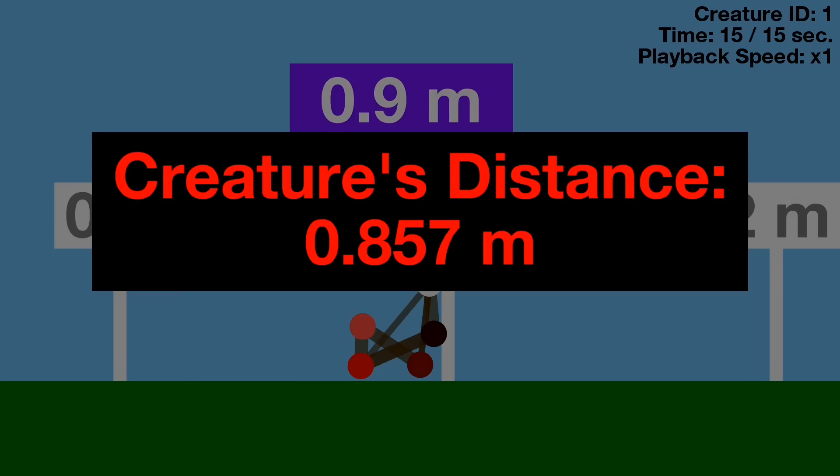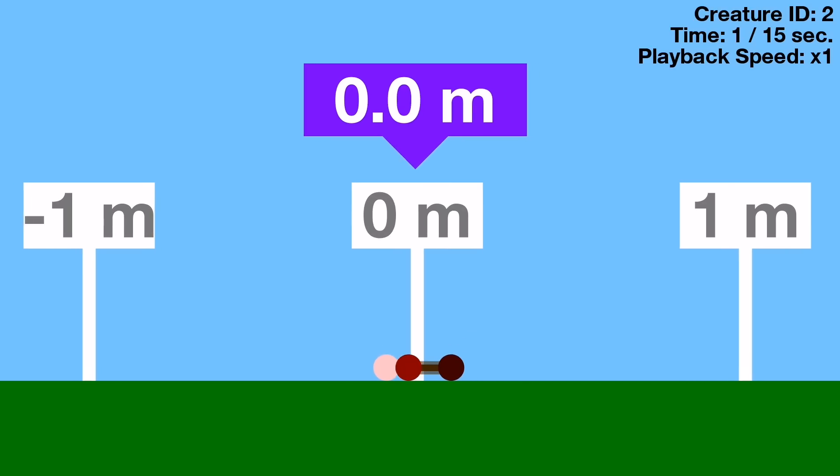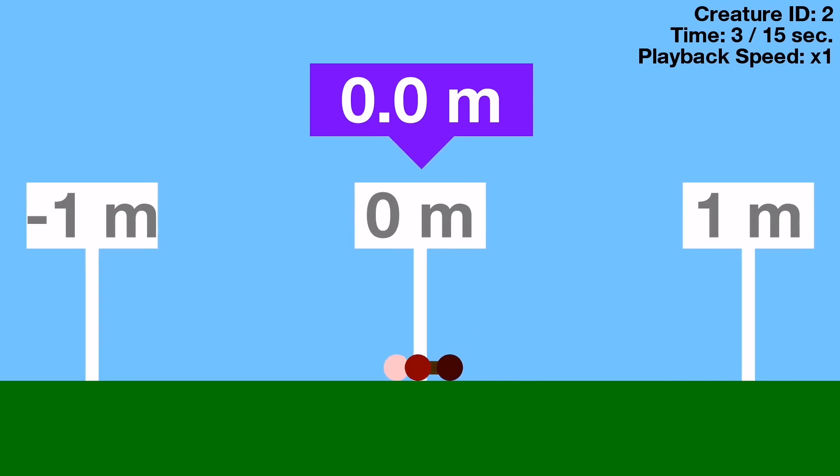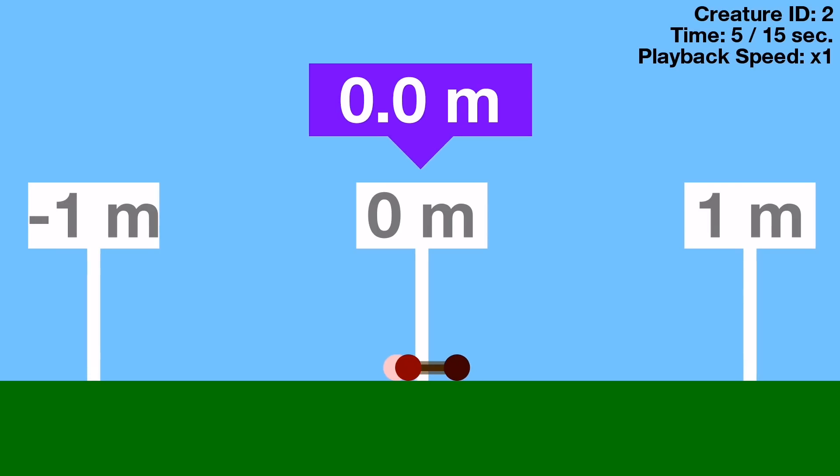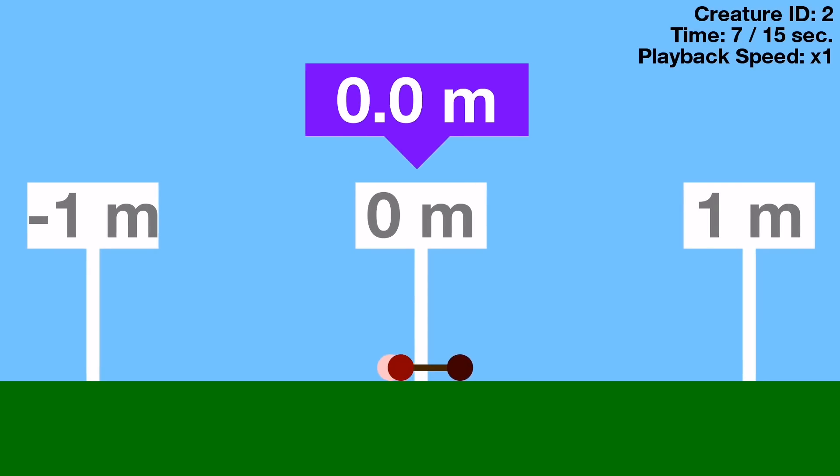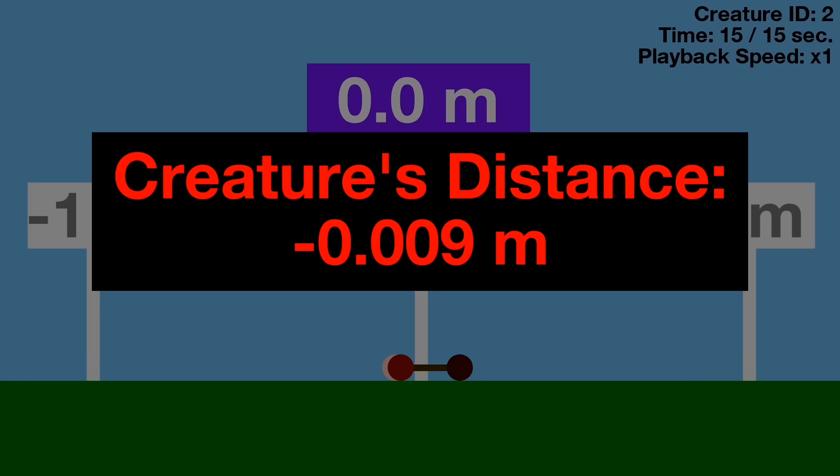0.86 meters. Can the next creature do any better? Unfortunately, when all nodes hit the ground at the same time, that's pretty much it for the creature. Because at that point, there's really nothing to push or pull against, so the creature just can't move anymore. So this collapsed triangle gets a measly negative 9 millimeters.